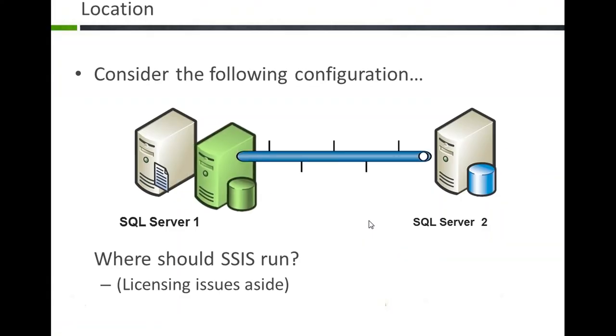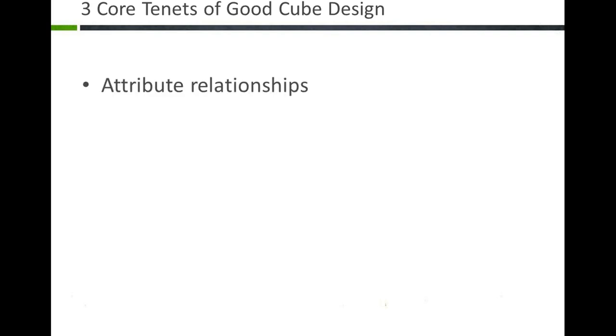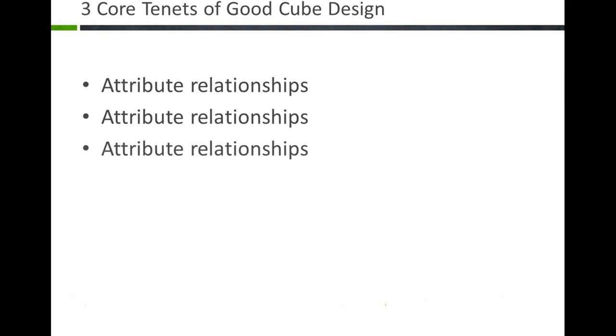Now let's talk about Analysis Services. There are really three things to consider when tuning an Analysis Services cube: first, do you have attribute relationships on your dimensions? Second, do you have attribute relationships on your dimensions? And third, do you have attribute relationships on your dimensions? Seriously — this is a really big deal. If you don't have attribute relationships on your dimensions it will cause serious problems.